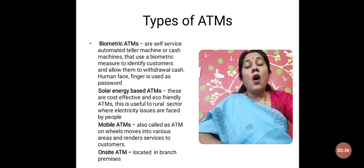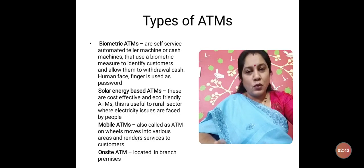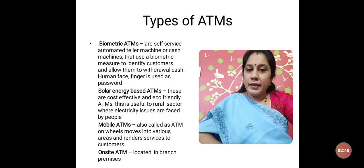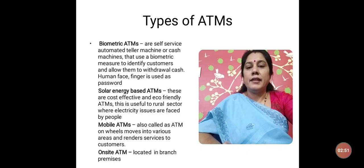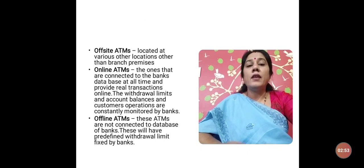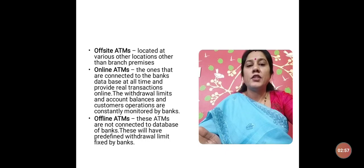On-site ATMs are those ATMs which are located in the branch premises. For example, if you go to a Vijaya Bank and there is a Vijaya Bank ATM within the Vijaya Bank premises, that is an example of an on-site ATM. Off-site ATMs are located at various other locations other than branch premises.